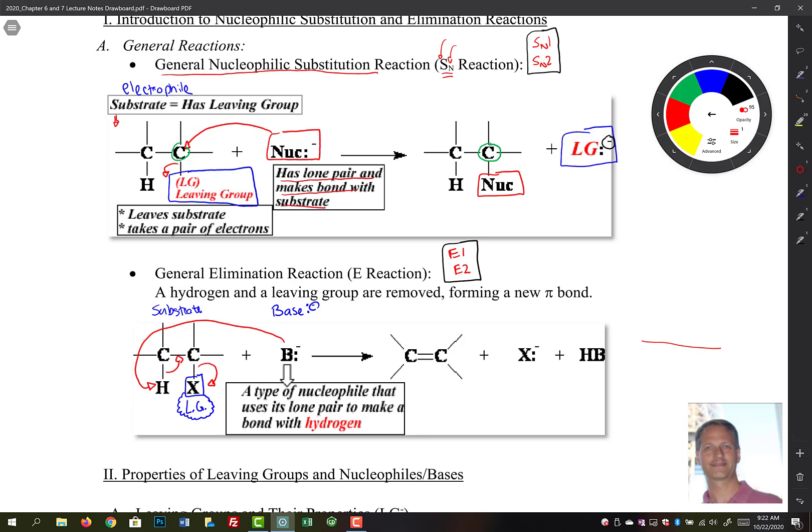So what we make here in the end is HB. So that's your base that grabbed a hold of that hydrogen. Your X minus, again, that's your leaving group here. And then the other thing is we make an alkene. So these things make alkenes.